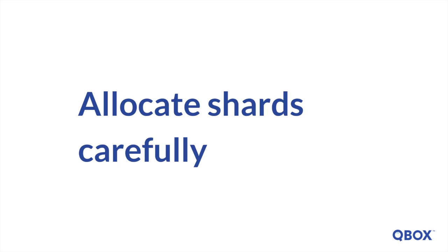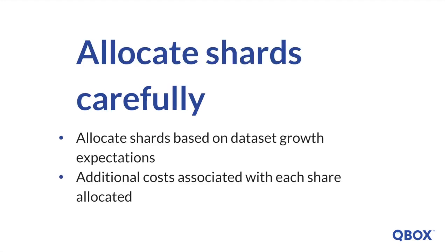If you discover it's necessary to change the number of shards, you will need to re-index all the source documents. The primary shard configuration is comparable to a hard disk partition, in which a repetition of raw disk space requires a user to backup, configure a new partition, and rewrite data onto the new partition. The key consideration when allocating shards is your expectation for the growth of your data set. It's common to over-allocate on shard count. In the early days, Elastic promoted this idea, but have since advised caution.